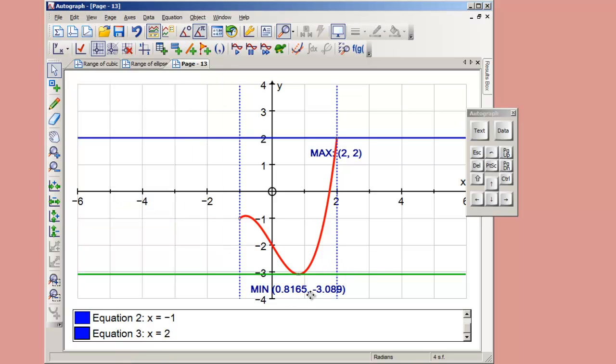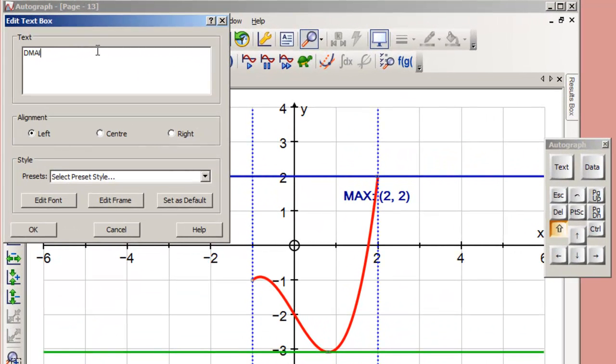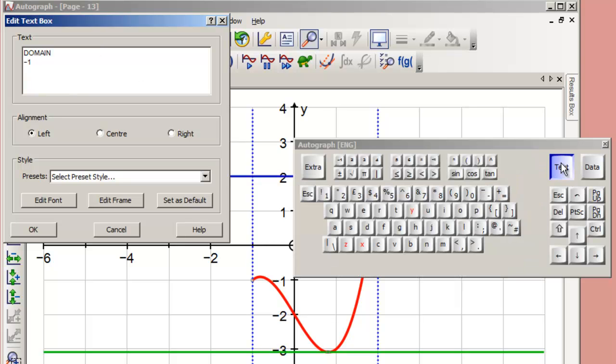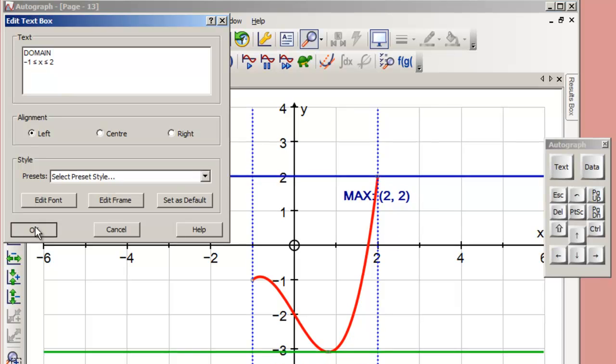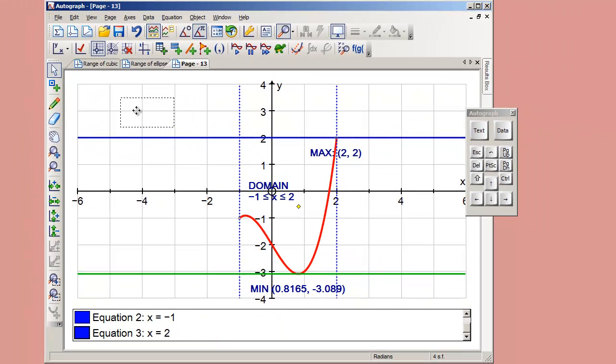You can now see the range goes from negative 3.089 to 2. You might want to put a text box announcing the domain. The domain goes from negative 1 less than or equal to x less than or equal to 2, which is on the floating keyboard. That's one way of looking at this for a straightforward cubic.